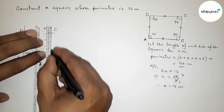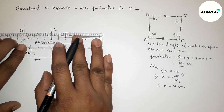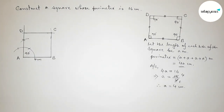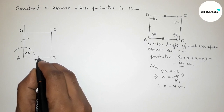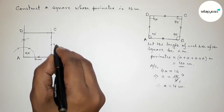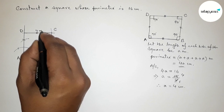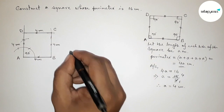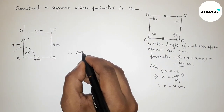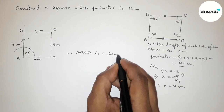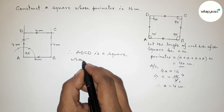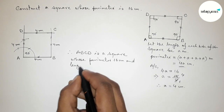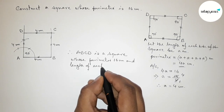Joining line BC, then joining line CD to complete the square ABCD. The line AB equals 4 centimeters, and all the sides are equal at 4 centimeters. Therefore ABCD is a square whose perimeter equals 16 centimeters and the length of each side equals 4 centimeters.